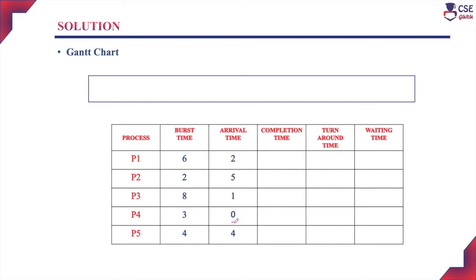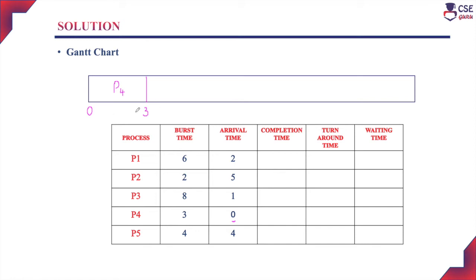At time 0 milliseconds, process P4 is the only process in the ready queue. To solve any scheduling algorithm, we first construct the Gantt chart, which shows the starting time and completion time of each process clearly. Process P4 is assigned to the CPU first, and the CPU time starts at 0 milliseconds. The burst time of process P4 is 3 milliseconds, so it takes 3 milliseconds of CPU time to complete its execution.